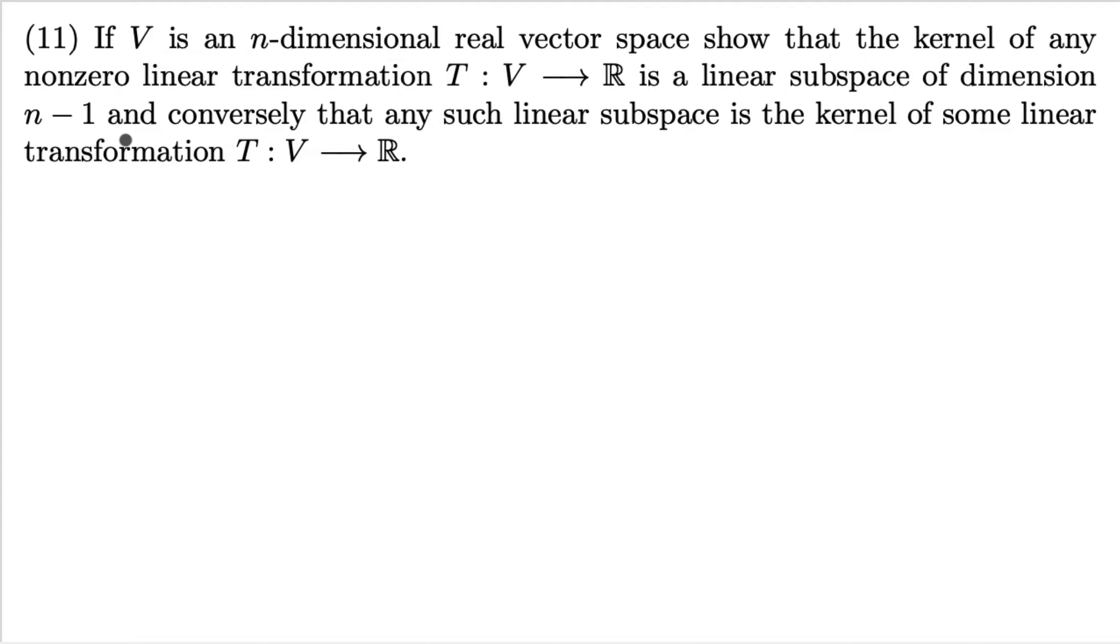If V is an n-dimensional real vector space, show that the kernel of any non-zero linear transformation T from V to R is a linear subspace of dimension n minus 1, and conversely, that any such linear subspace is the kernel of some linear transformation T from V to R.